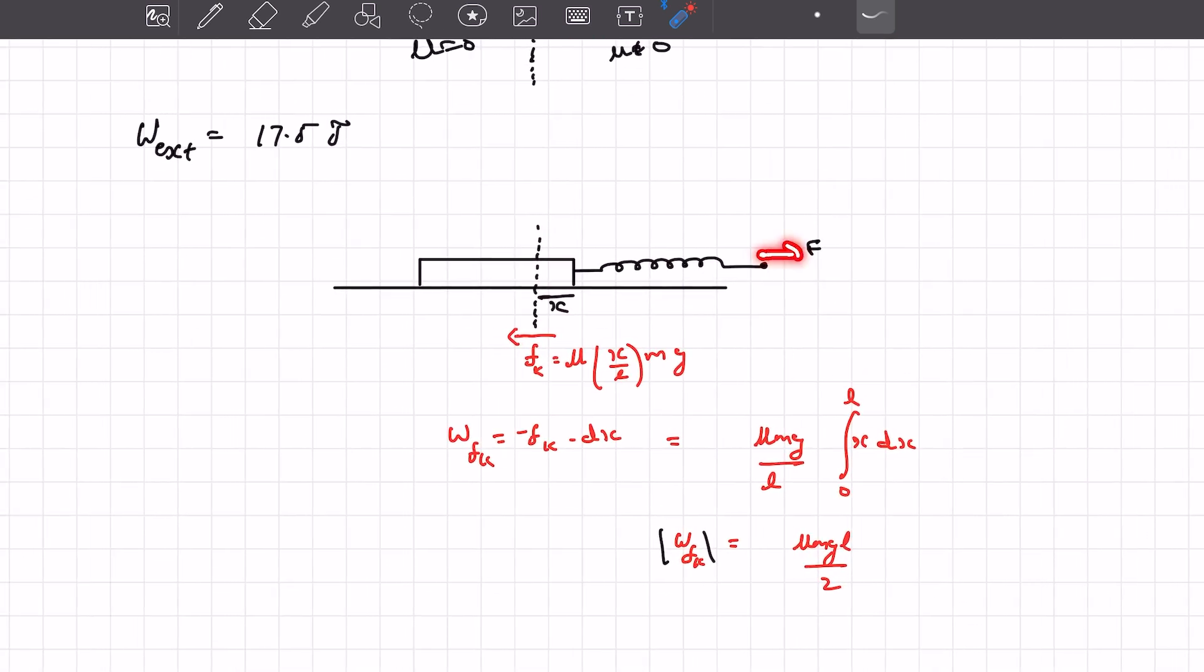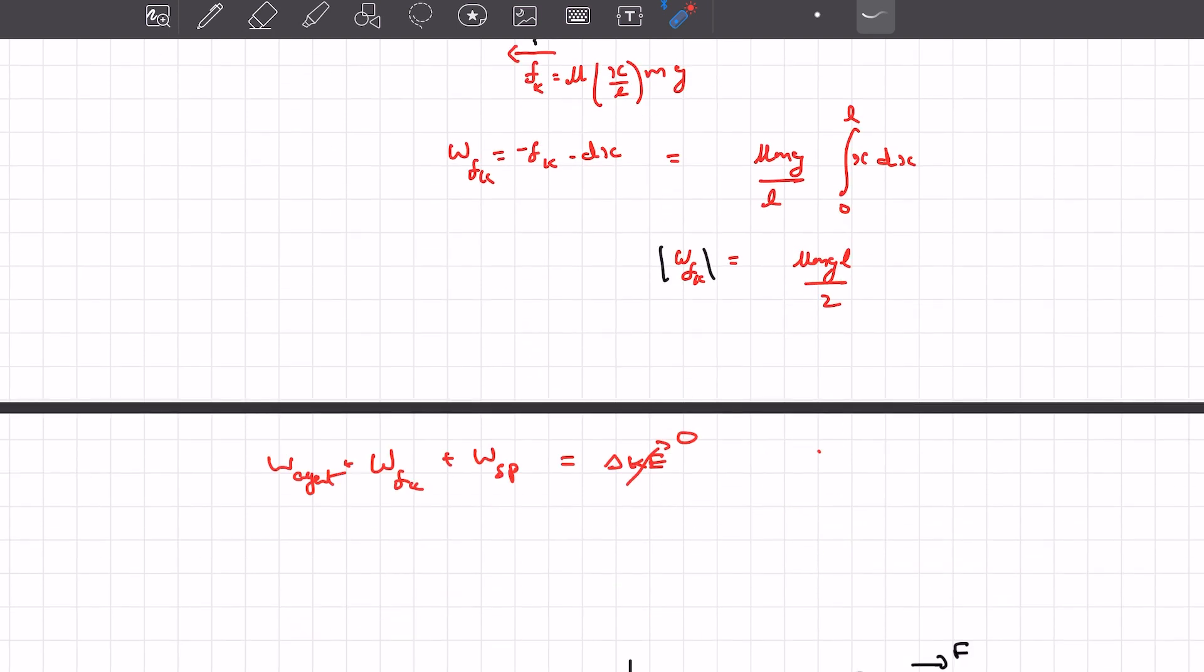What that means is this force will be such that it will just be equal to the kinetic friction at that instant, to make sure that the rod doesn't gain any acceleration or velocity. So we could just say the change in kinetic energy is zero. Everything is done so slowly.